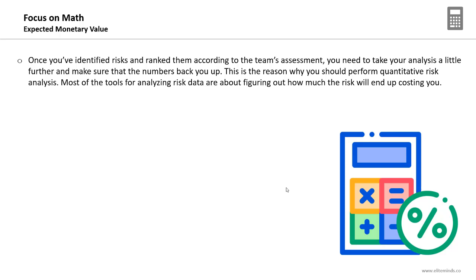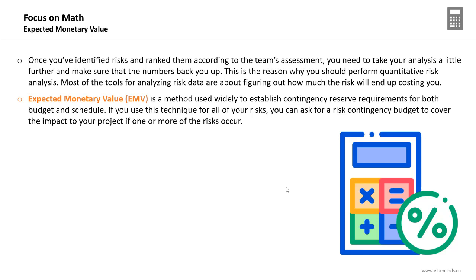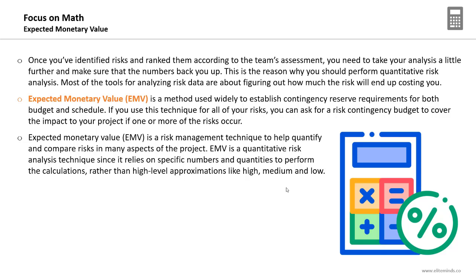Most tools for analyzing risk data are about figuring out how much the risk will end up costing you. The Expected Monetary Value (EMV) is a method used widely to establish contingency reserve requirements for both budget and schedule. It provides a scientific method of determining the exact required contingency reserves for your project. Using this technique for all your risks, you can ask for a risk contingency budget to cover the impact if one or more identified risks occur.